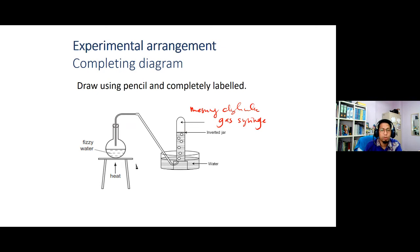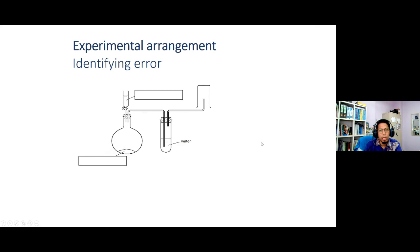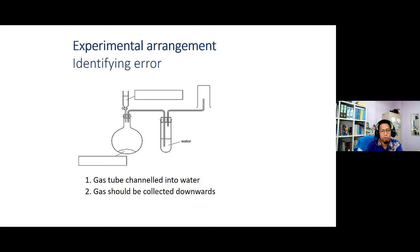Ini masih di soalan satu, tapi berkenaan dengan melengkapkan rajah. Ini pula adalah tentang mengenalpasti kesilapan dalam rajah. Kalau ikut soalan ini, collection of gas is downward — gas disalurkan ke dalam air. Ini kalau ikut arahan sebenar soalan. Sekadar memaklumkan di sini bahawa terdapat juga soalan yang meminta pelajar mengenalpasti kesilapan, dan ini juga penting.